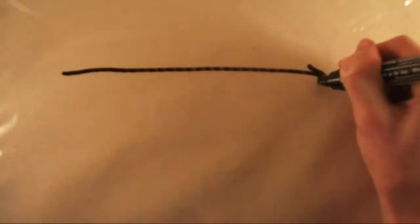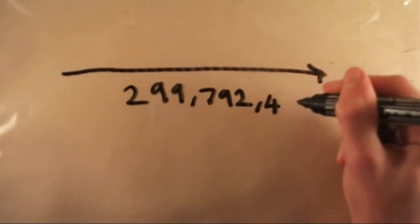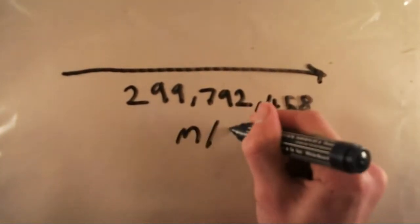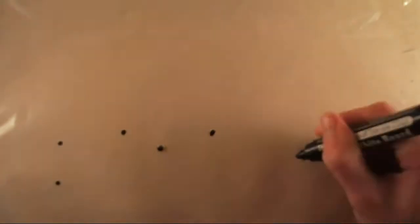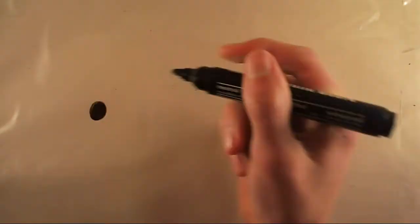We've learned in a previous video that light travels at 299,792,458 meters per second in a vacuum. What you might not know though is that when you look up at the stars, the sun or even the moon, you're seeing them in the past.